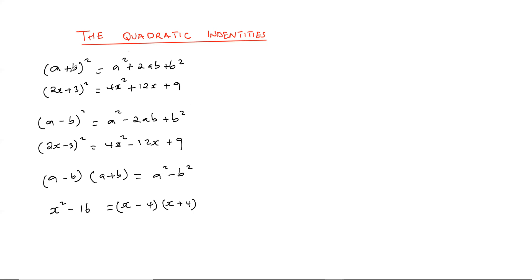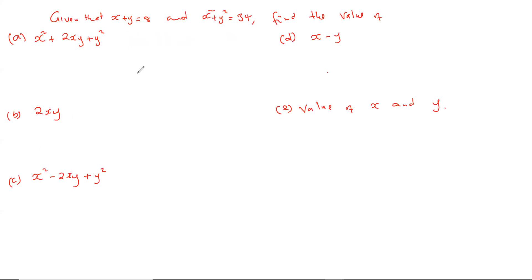Now the application — how you're supposed to use these identities. When you see an identity in one form, you can write it in the equivalent form. Here is a sample question: it is given that x plus y equals 8 and x squared plus y squared equals 34. Find the value of the following. You need the information given here to solve these questions — it is quite straightforward once you have the idea.